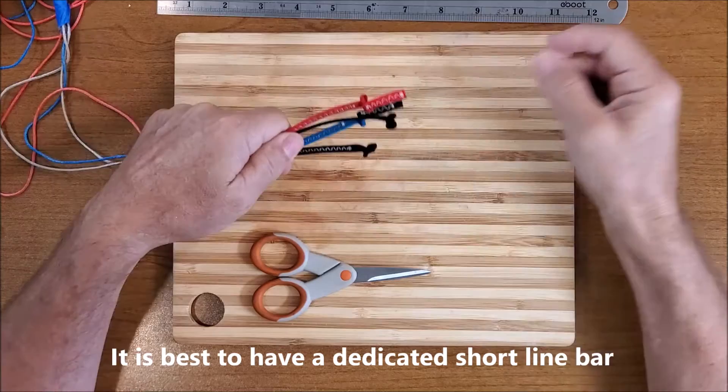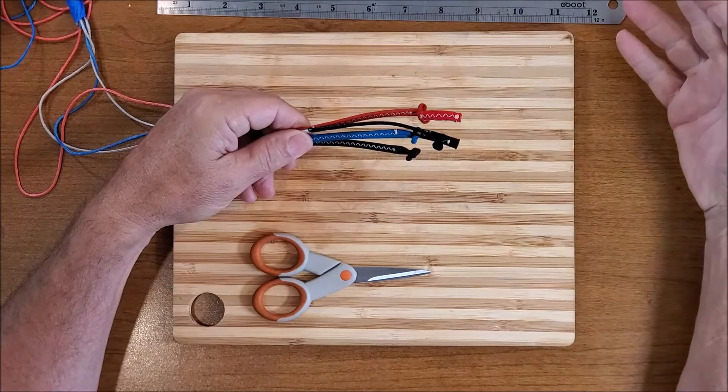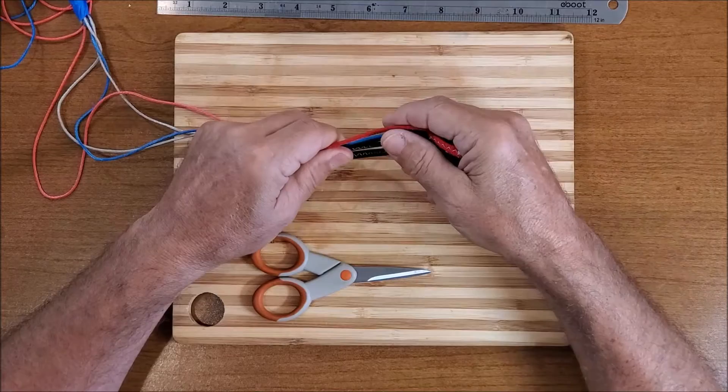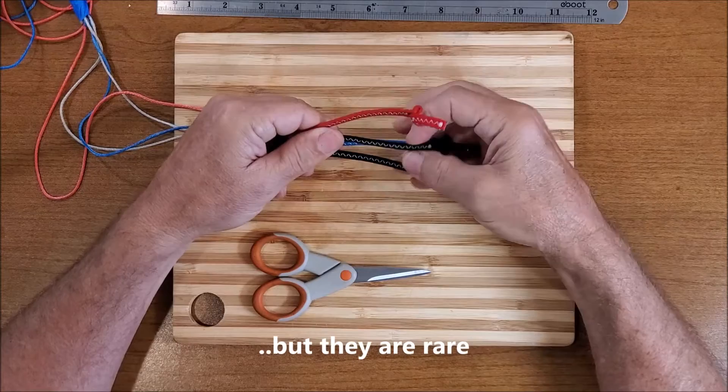Because I find it's always better to have a complete short line bar ready to go rather than having one bar and one set of lines that you're adding extensions to and taking off constantly. But either way you want to do it. You can also buy short line bars sometimes. It used to be more popular in kite board brands but now it's more of a rare thing.